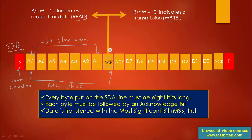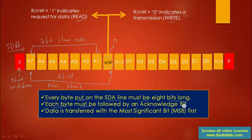Now let's assume that this bit is 0. So collectively, the address phase is of 8 bits. You have to remember that every byte put on the SDA line must be 8 bits long — you cannot put 7 bits, you cannot put 16 bits. You have to put 1 byte. Each byte must be followed by an acknowledge bit.